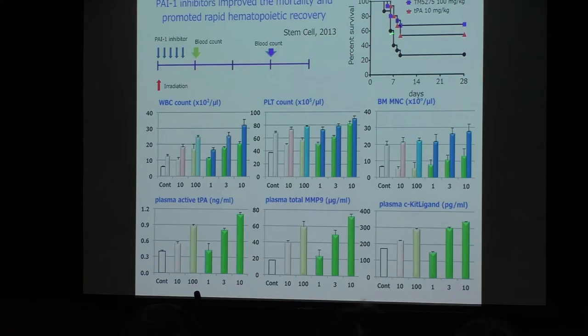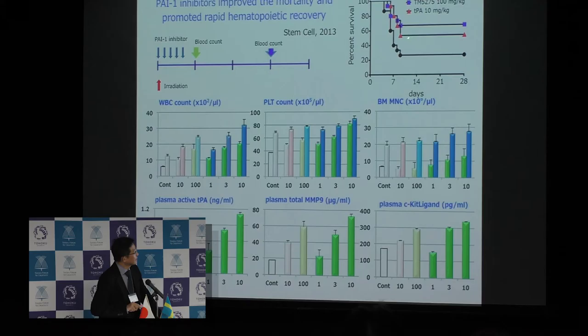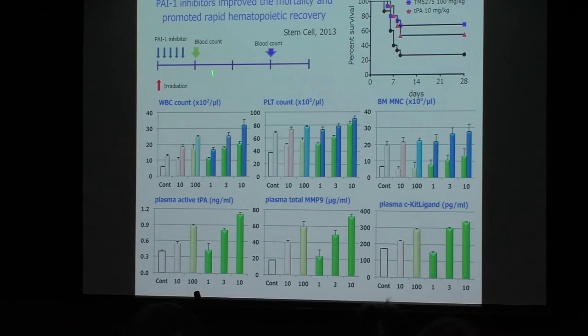In lethally irradiated mice, PAI-1 inhibitors improved mortality. In this model, 80% of mice died after one week, but those given PAI-1 inhibitors or tPA survived at almost 70%. This phenomenon is dependent on the increase of white blood cells and platelets. Even a few days after administration of PAI-1 inhibitors, you see an increase of these cells, and this depends on activation of tPA, MMP9, and the SDF-1 ligand.